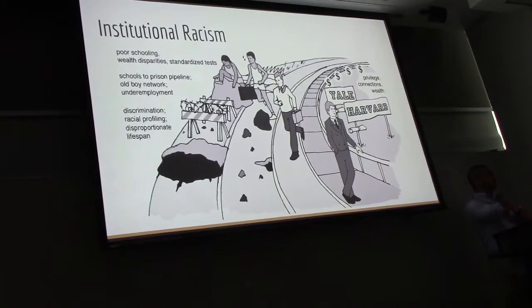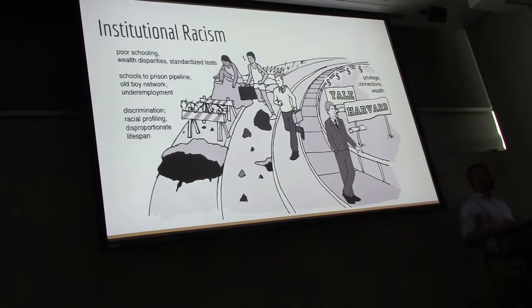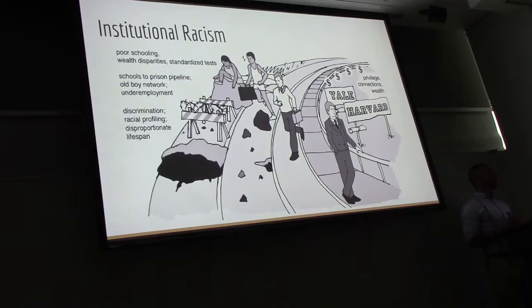Institutional racism is racism at a systems level. It's about access to goods, services, and opportunities, and how that access differs by race. For example, how the lack of access to housing, education, employment, and healthcare can disadvantage one group compared to another.